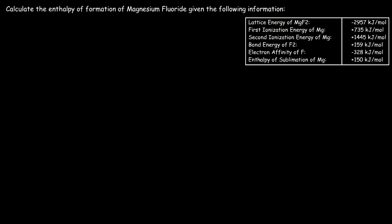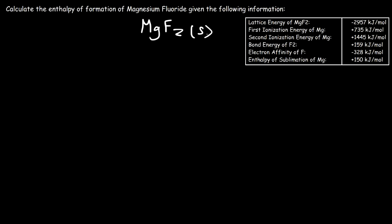In this video, we're going to talk about how to use the Born-Haber cycle in order to calculate the enthalpy of formation of magnesium fluoride. In order to do so, we need to write the reaction that corresponds to that — the formation of magnesium fluoride from its elements in their natural state, with only one mole of MgF₂ on the right side. Magnesium fluoride is a solid, and it's composed of magnesium metal and fluorine gas. The energy change for that reaction is the enthalpy of formation of MgF₂.